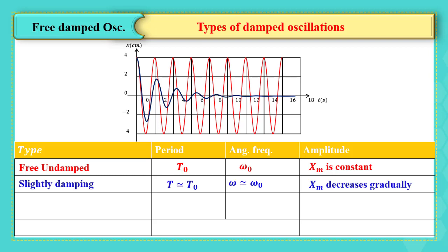The second type is large damping. In this case, the period is approximately greater than the proper period. The pseudo angular frequency is approximately less than omega zero, and the amplitude here decreases with time and eventually becomes zero.